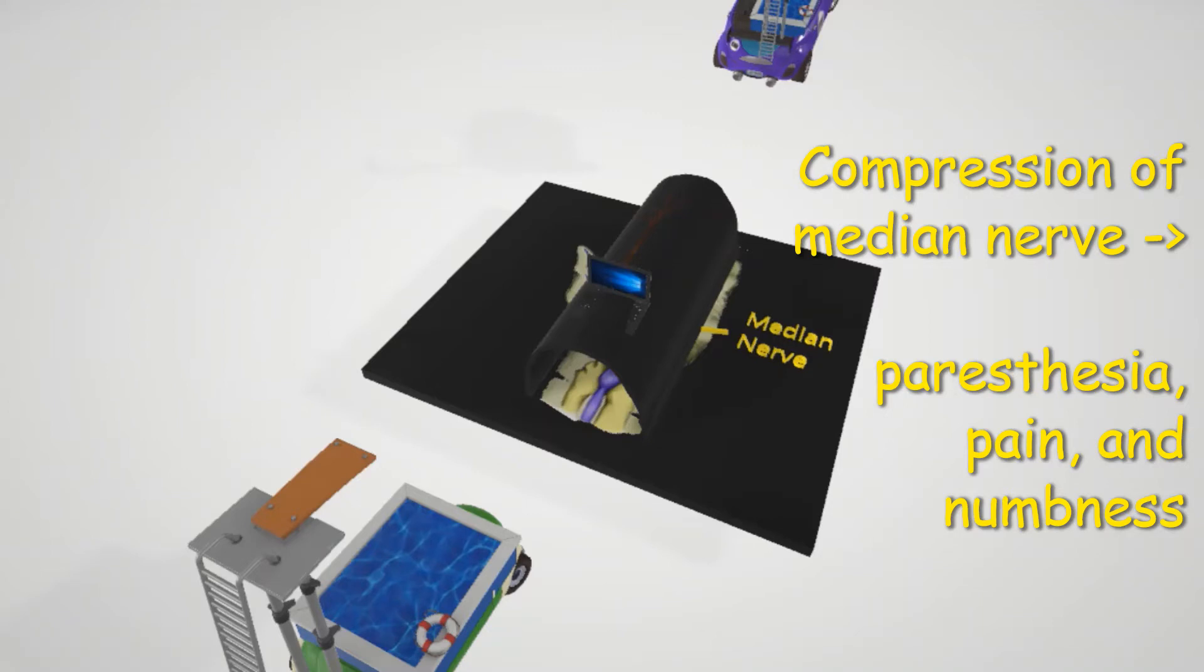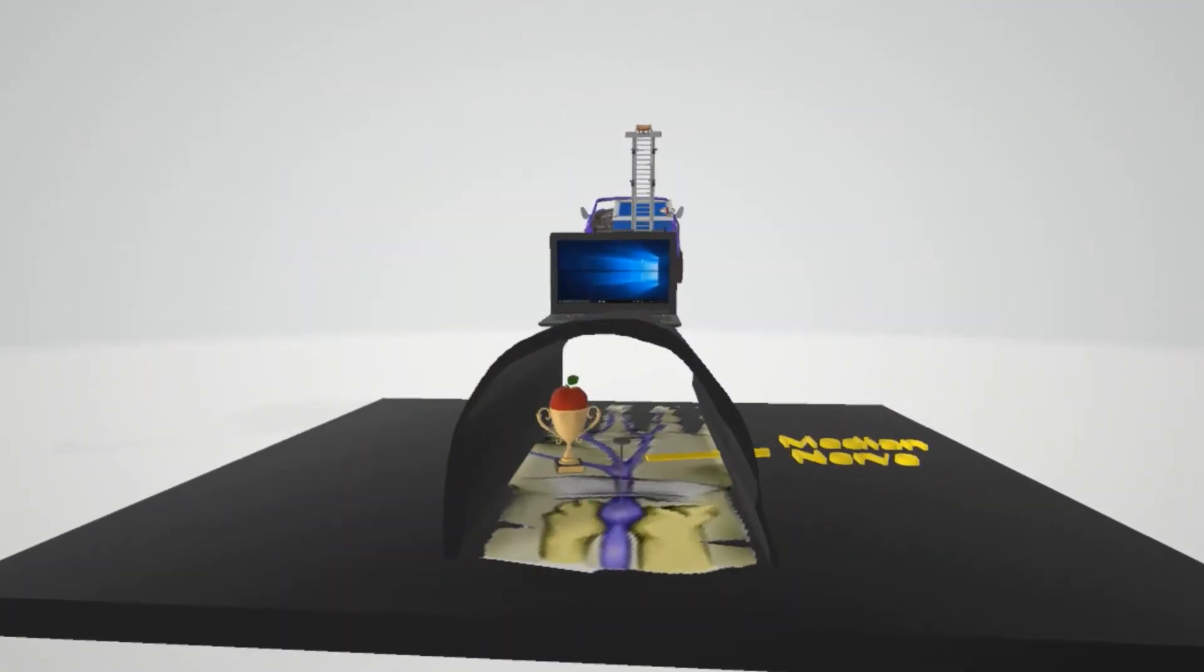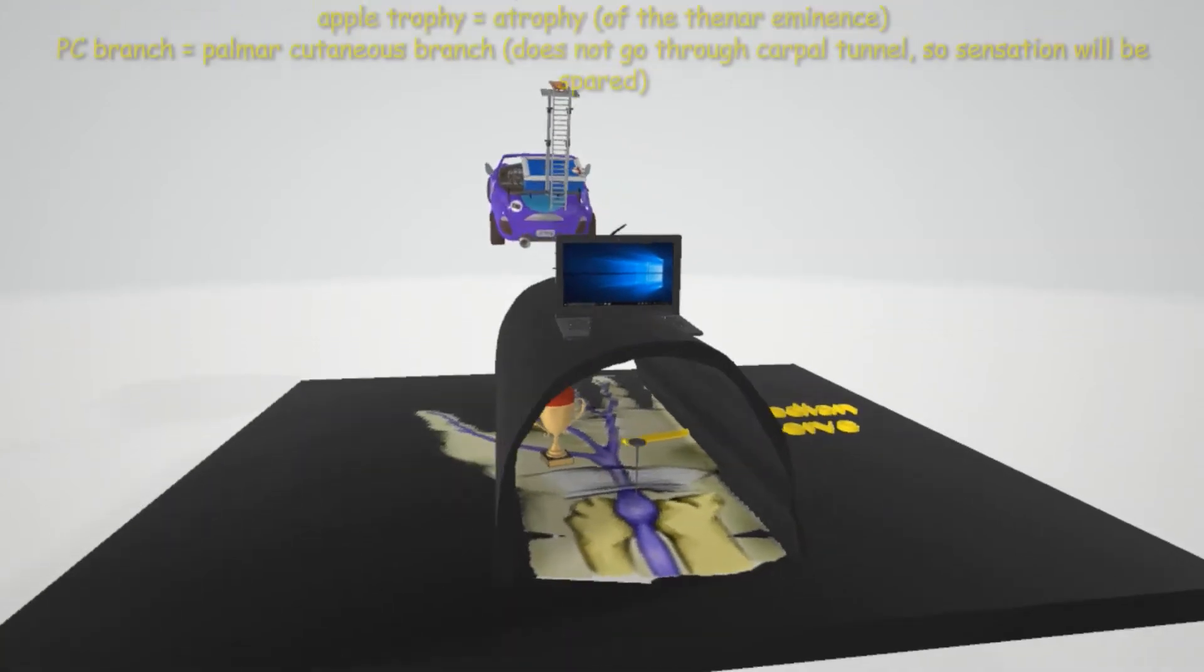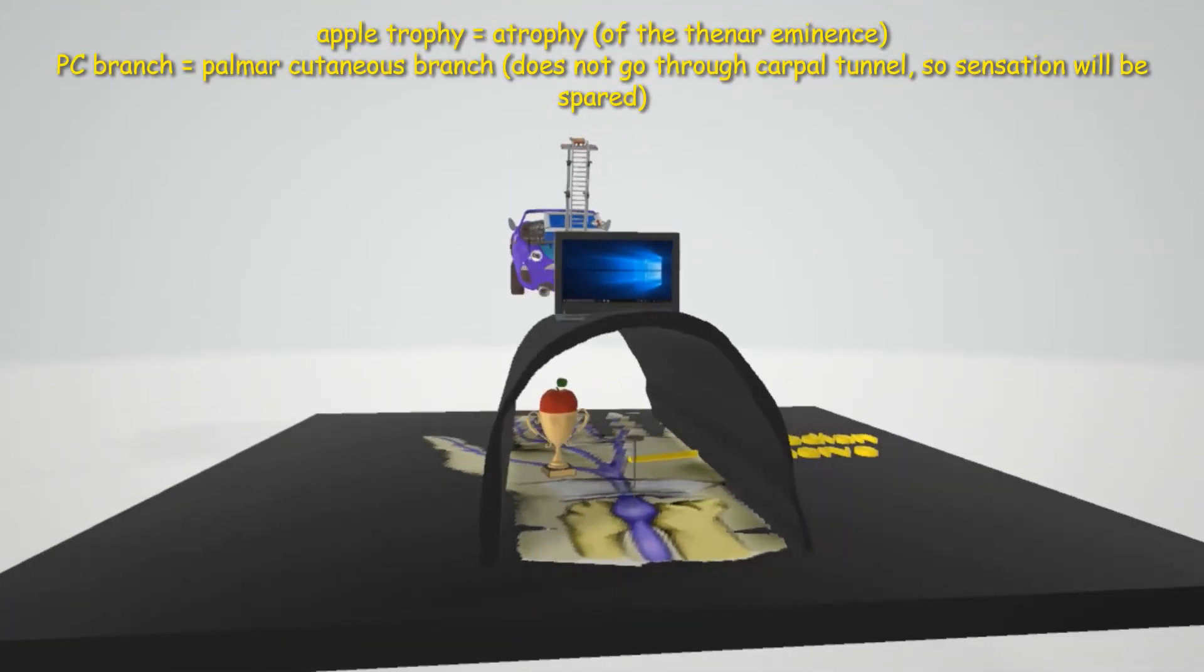If you take a look inside this tunnel by the thenar eminence at the hand, we see a trophy with an apple in it on the thenar eminence. That's to remember the apple trophy, or the atrophy of the thenar eminence seen in carpal tunnel syndrome.